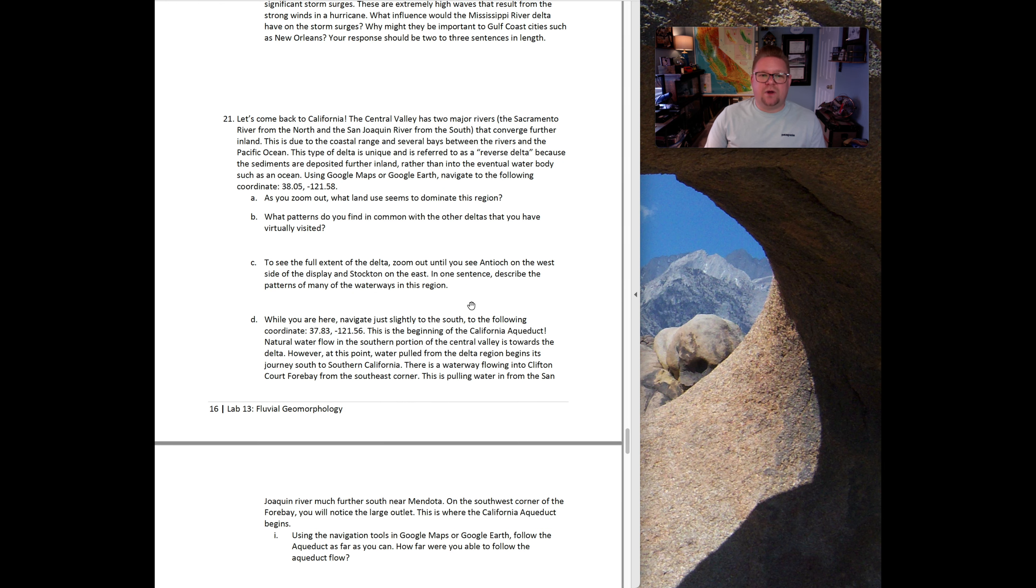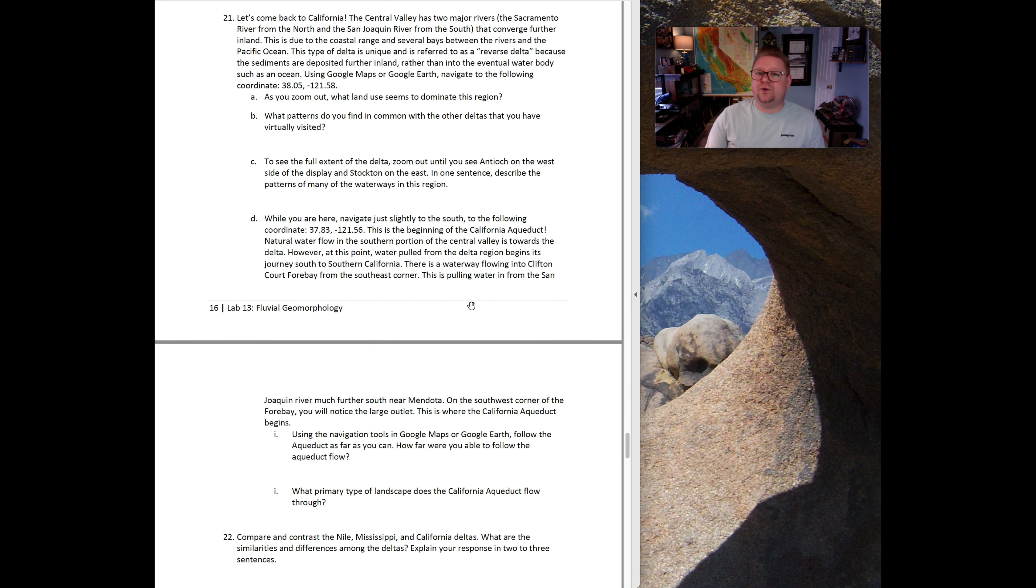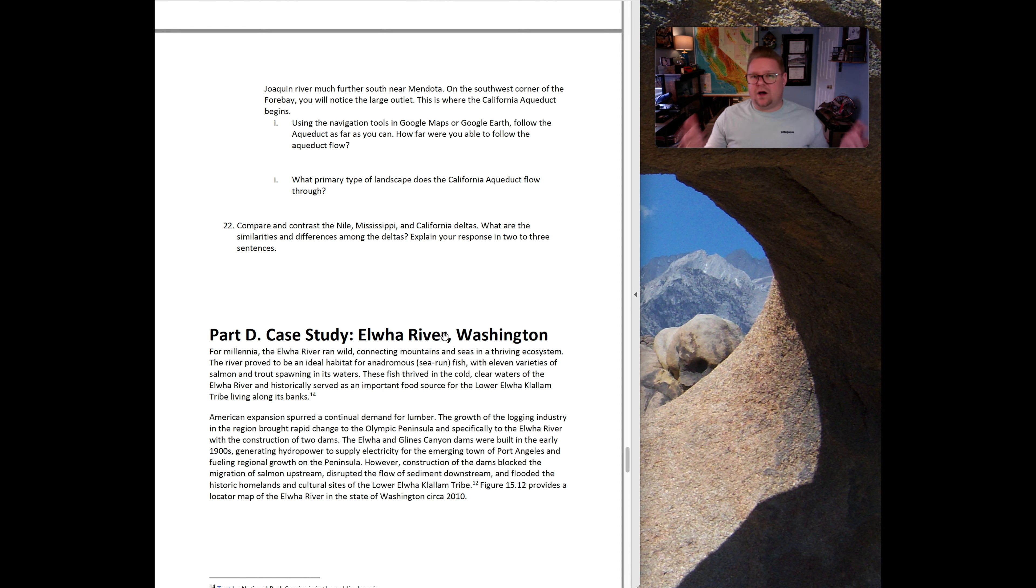Question 21: let's come back to California. The Central Valley has two major rivers. The Sacramento from the north and the San Joaquin from the south that converge further inland. This is due to the coastal range and several bays between the rivers and the Pacific Ocean. This type of delta is unique and is referred to as a reverse delta because the sediments are deposited further inland rather than eventually as a body of water or into the ocean itself. Using Google Earth or Google Maps, navigate to the following location and zoom and walk through those processes. Once you've completed your California version, it's going to have you wrap up by looking at a compare and contrast of all three of those types. You looked at the Nile, the Mississippi, and the California Deltas. What are some similarities that you observed? What are some differences that you observed? Be sure to wrap that up in two to three sentences each. And that being said, we wrapped up Part C.